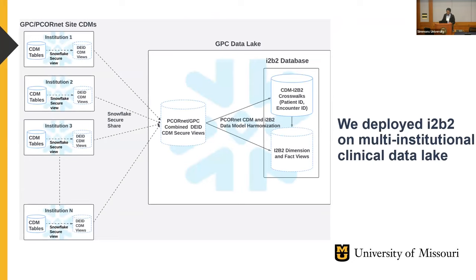Because of this implementation, we were able to combine all data sources from the GPC side — we have 30 institution's data in one place in combined views — and we created I2B2's fact and dimension tables as views on top of that combined view.